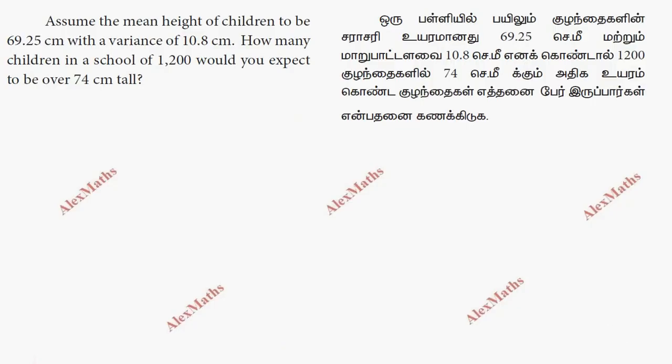Hi students, this is Alex. In this problem, the mean height of children is 69.25 centimeters with a variance of 10.8 centimeters. The mean μ is 69.25.